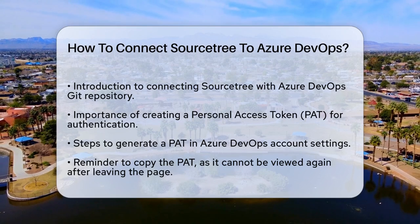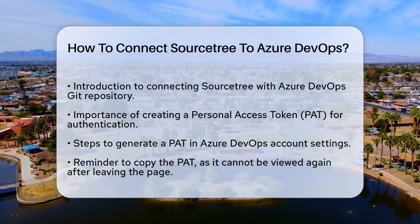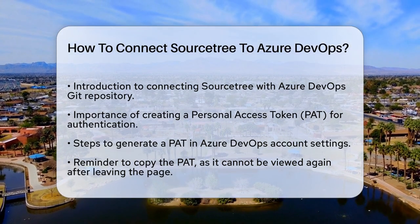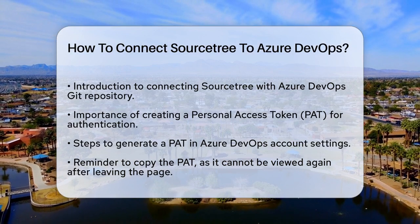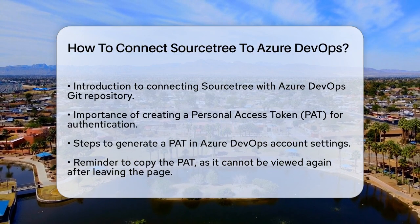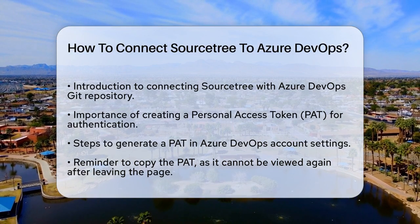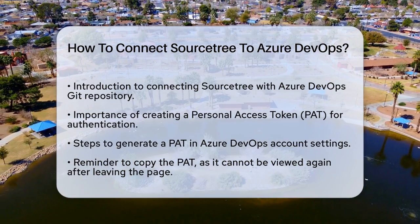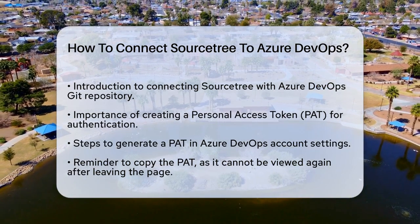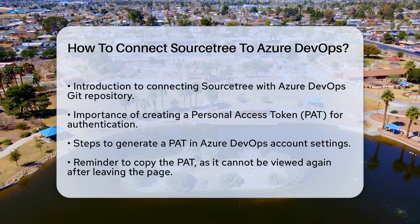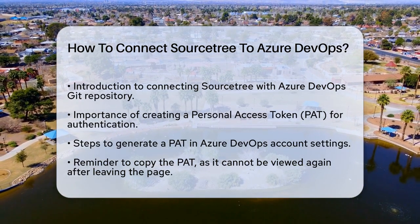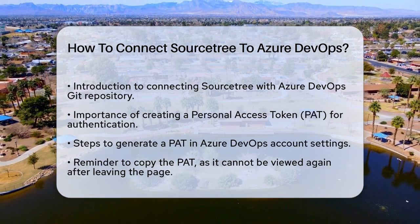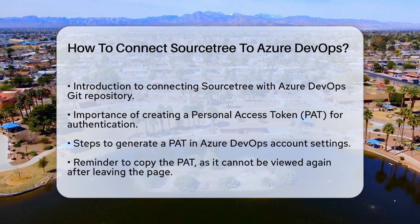First, you need to create a personal access token (PAT) in Azure DevOps. This token is essential for authentication. Go to your Azure DevOps account, navigate to the user settings, and generate a new PAT. Make sure to copy the generated token, as you won't be able to view it again after you leave the page.